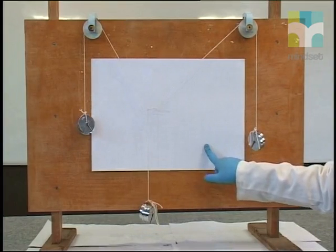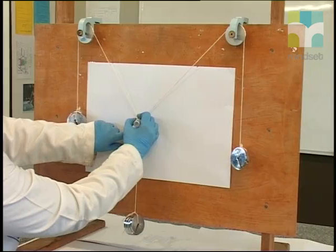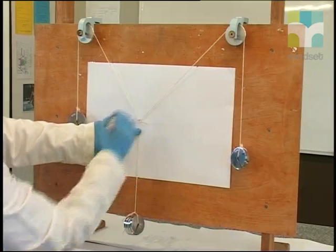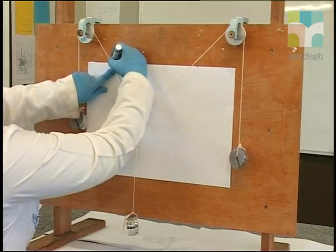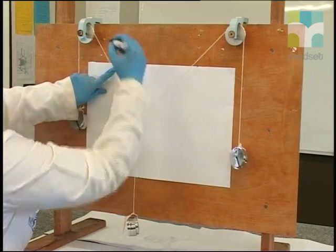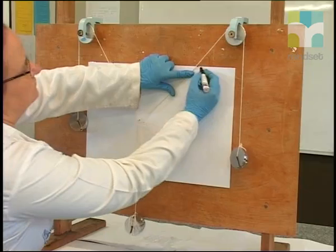Look at this sheet of paper I have taped onto the board. It is here so that I can draw the position of the strings on it. Later, I'll take the paper off and the pencil marks will be the data we'll work with.